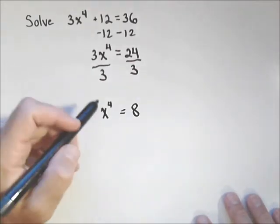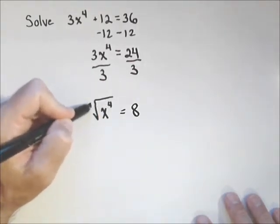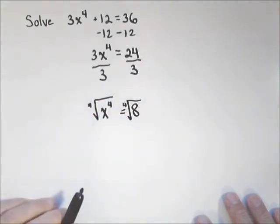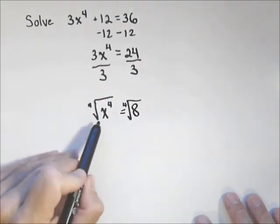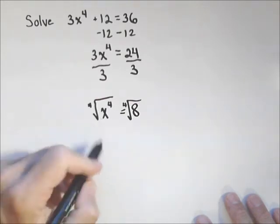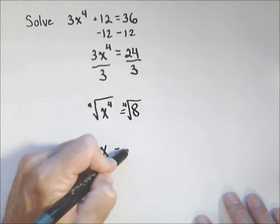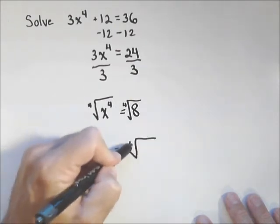Now we're gonna conclude by taking the fourth root of both sides. So what we have is that x equals the fourth root of eight.